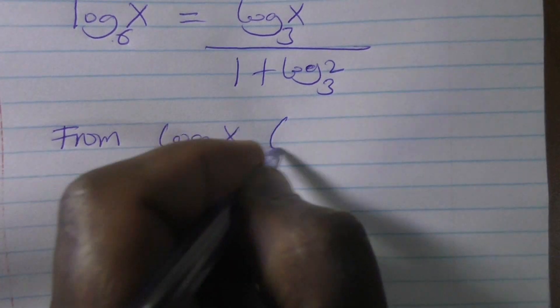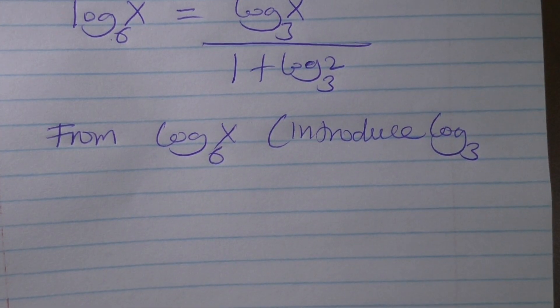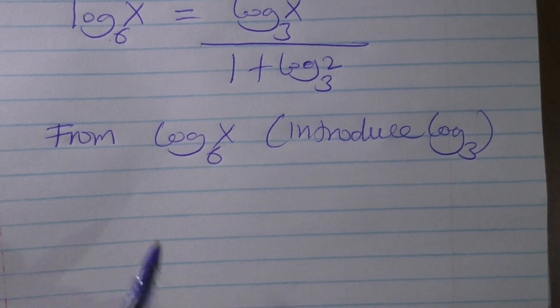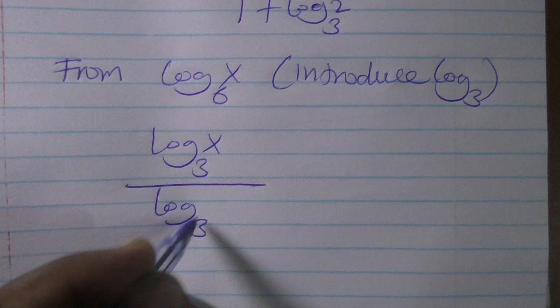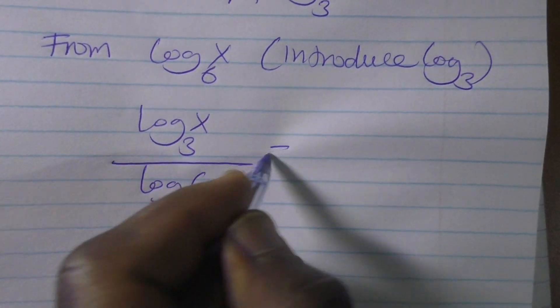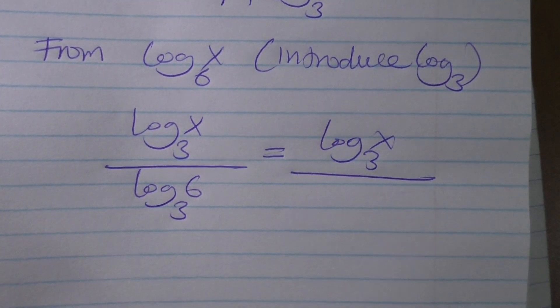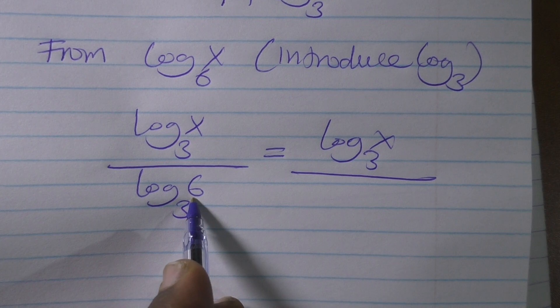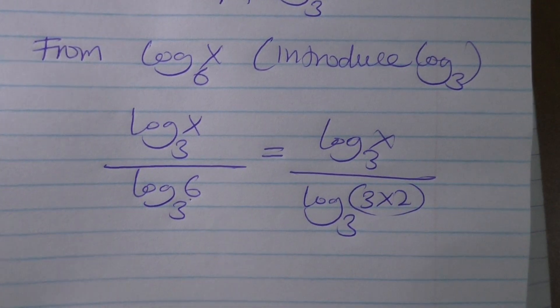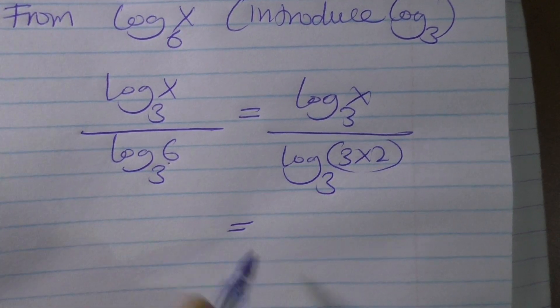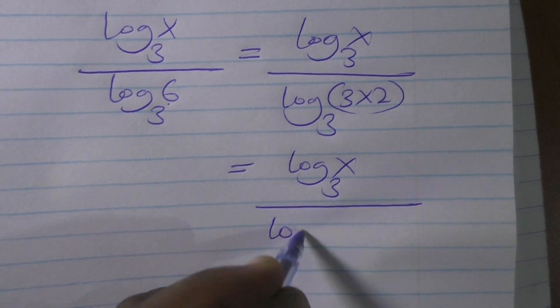When we introduce log base 3, it becomes log base 3 of x divided by log base 3 of 6. So we can further simplify this. We shall have log base 3 of x over, but 6 is 2 times 3, so that is log base 3 of 3 times 2.